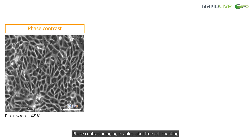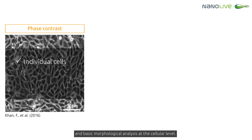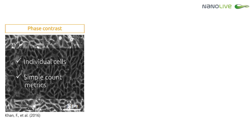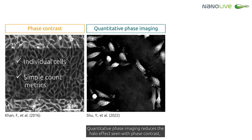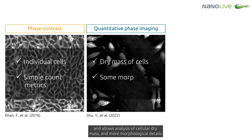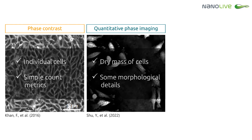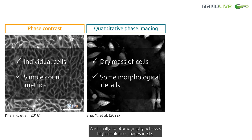To summarize briefly, phase contrast imaging enables label-free cell counting and basic morphological analysis at the cellular level. Quantitative phase imaging reduces the halo effect seen with phase contrast and allows analysis of cellular dry mass and more morphological details.